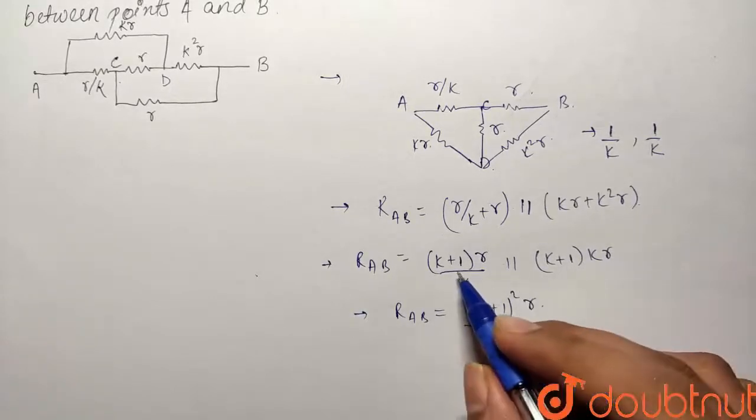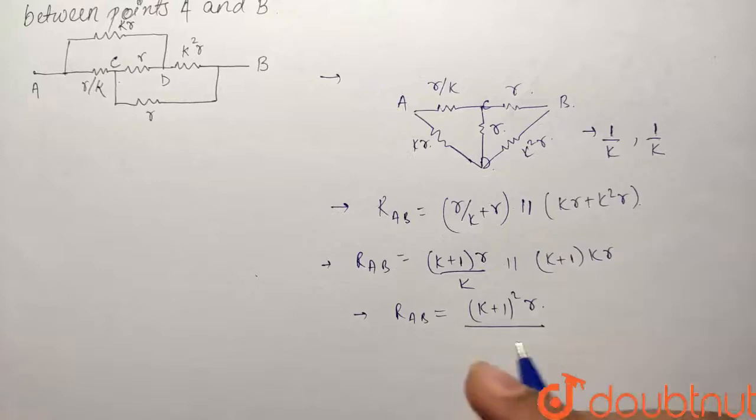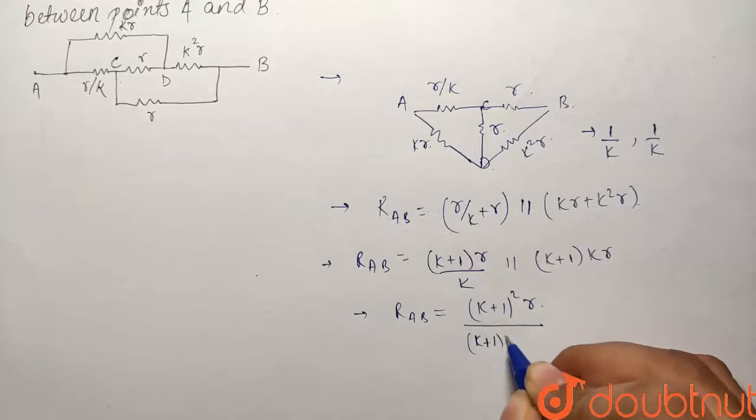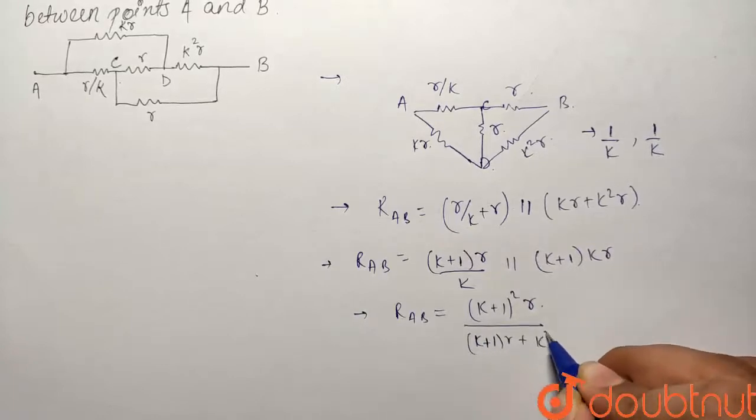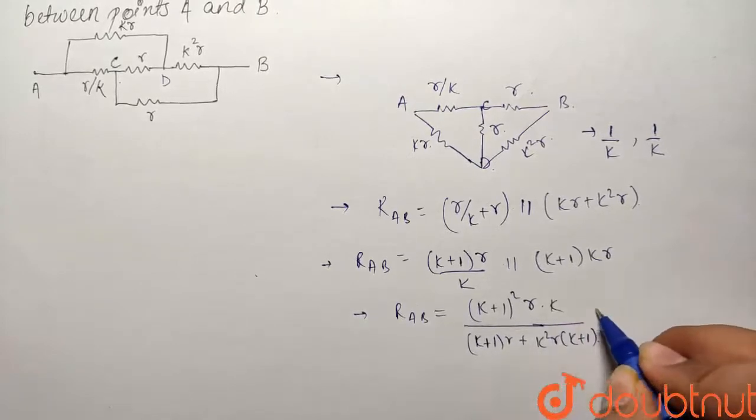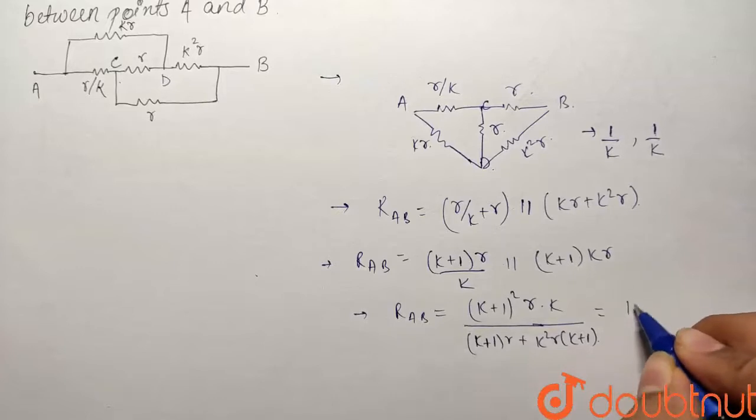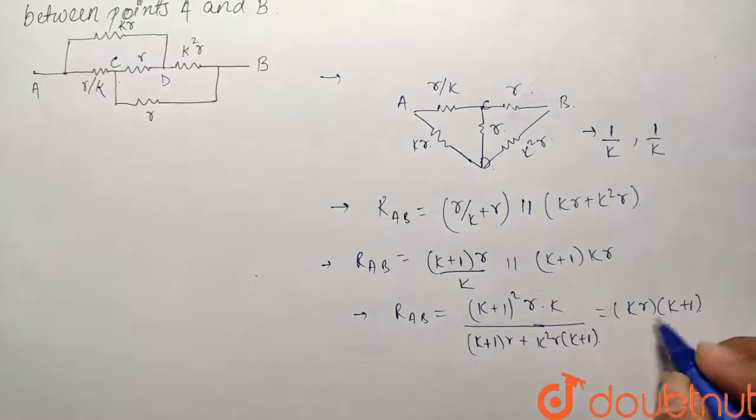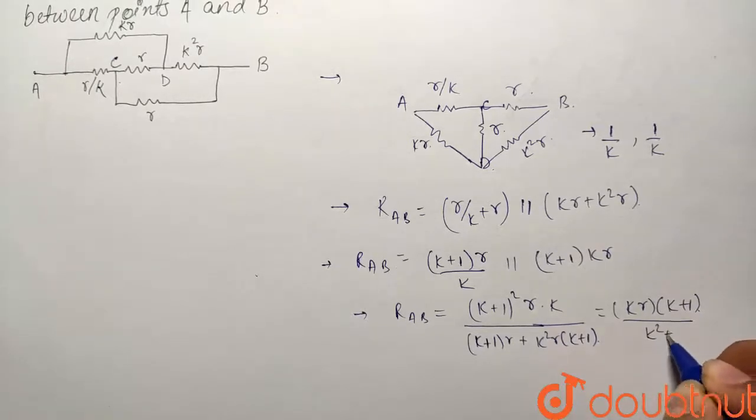What will be their summation if we add both of these? This will become K plus 1 R plus K square R into K plus 1 and this K in the denominator will go up. So after simplifying what it becomes, it becomes KR multiplied by K plus 1 divided by K square plus 1.